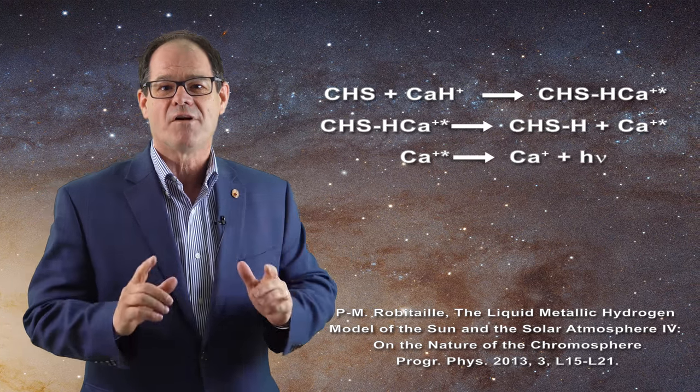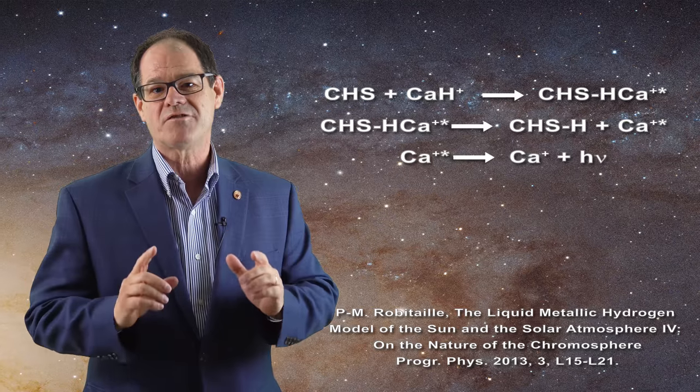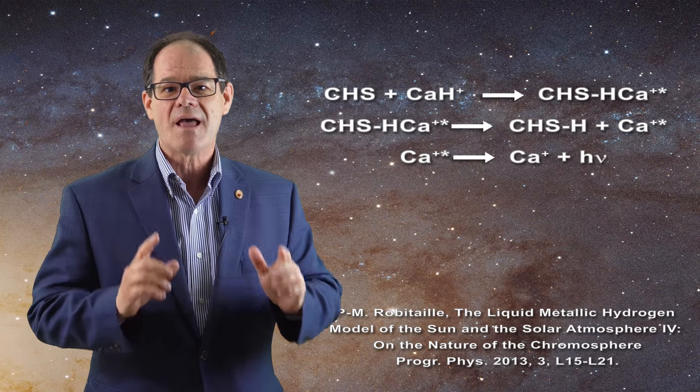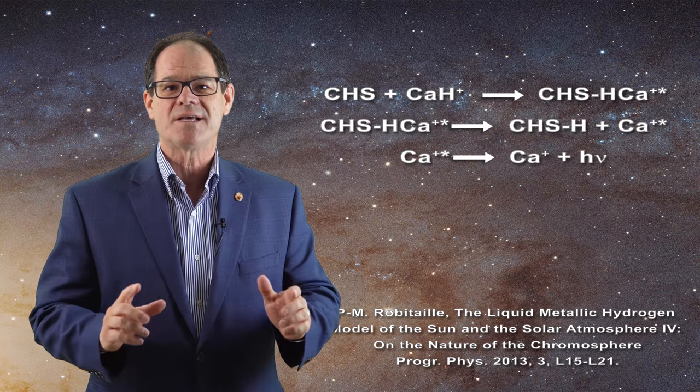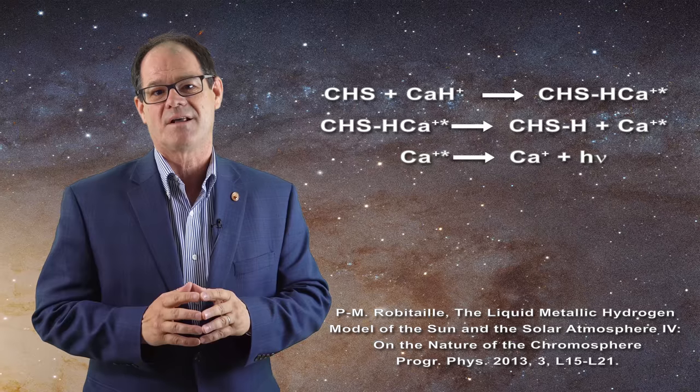In our last video I emphasized the role of one-electron transitions in the chromosphere. Those reactions are important as they signal that condensation reactions such as these are involved in the transfer of a hydrogen atom and are taking place in this region of the Sun.